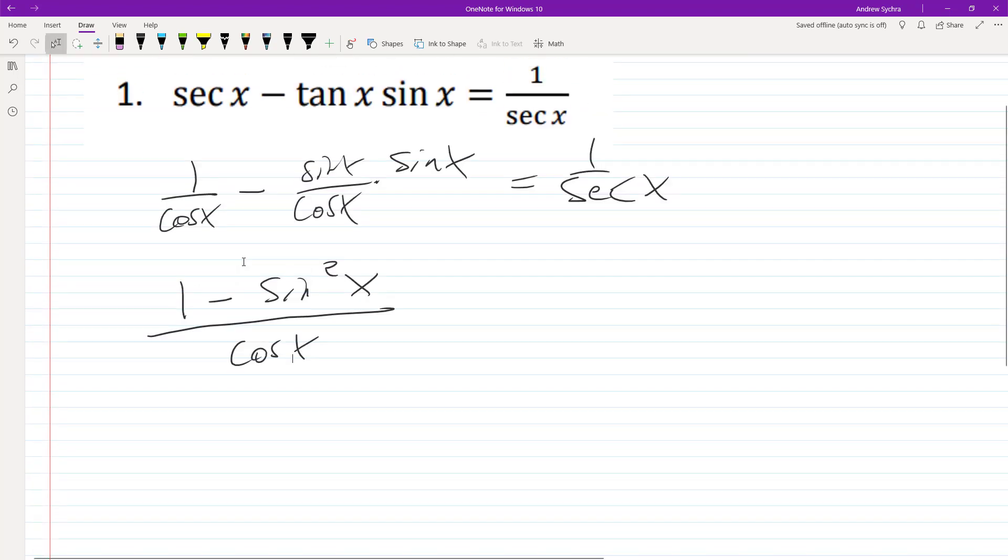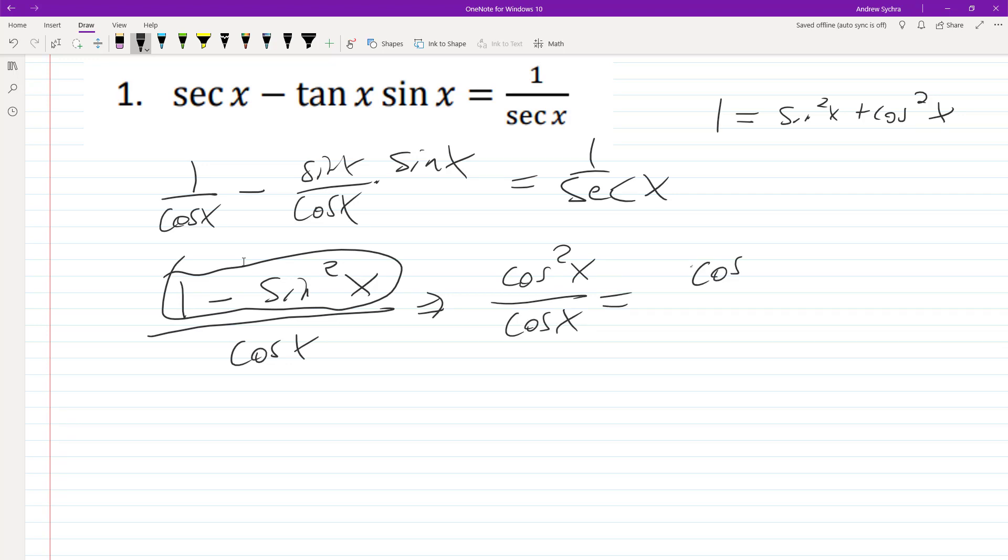If you look here, this is a trig identity. It's equal to, well, 1 is equal to the sine squared x plus cosine squared x. And because of that, you see 1 minus sine squared x is equal to cosine squared x, which is equal to cosine of x, because this cancels out one of these.